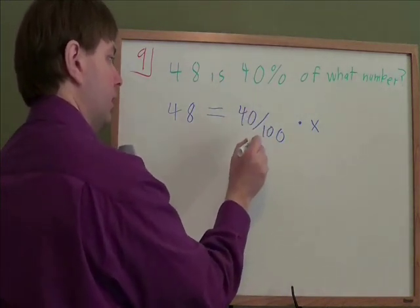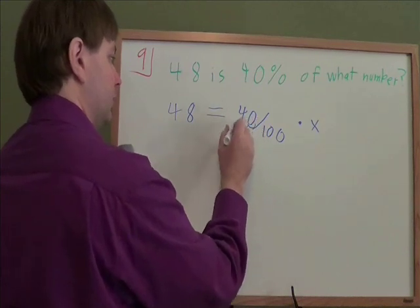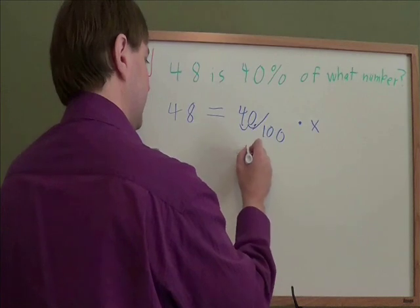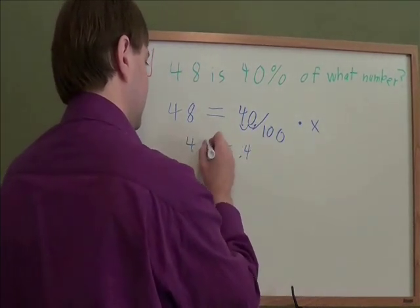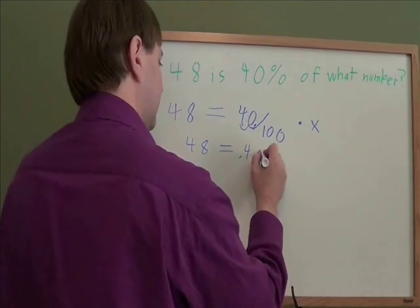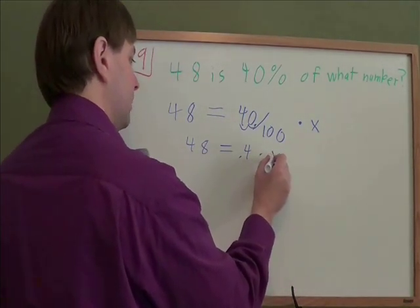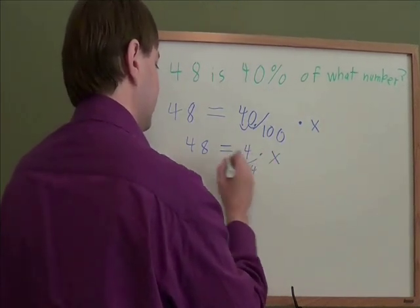40 divided by 100. Remember, any time you're dividing by 100, that's the same as moving a decimal twice. So 40 becomes 0.40, or just 0.4. 48 equals 0.4 times x. To get x by itself, we need to get rid of that times 0.4. We need to divide by 0.4.